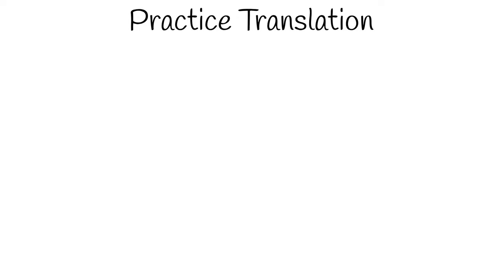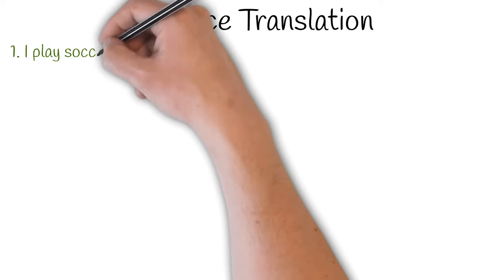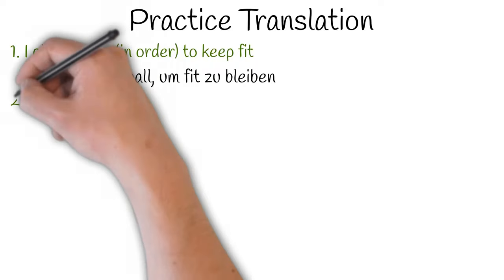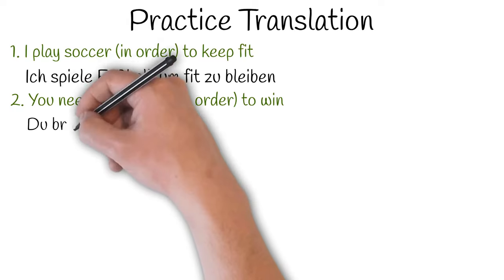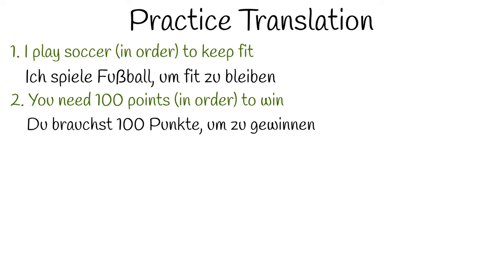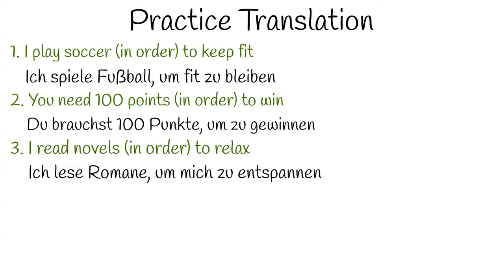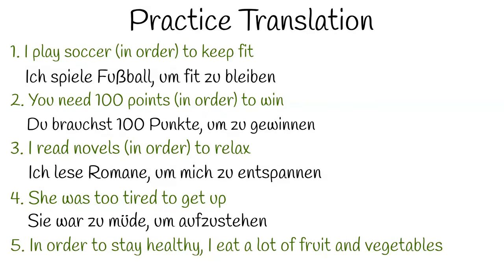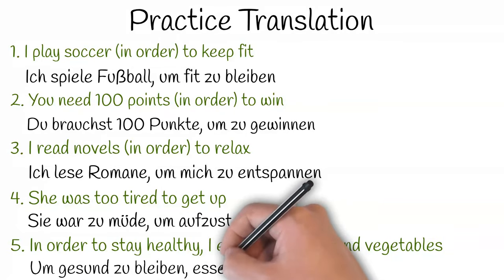Finally, let's do some practice translation from English to German at an easier level. Pause the video after each sentence to try to translate it, then compare with the correct translation. Number one: 'I play soccer in order to keep fit' — 'Ich spiele Fußball, um fit zu bleiben.' Number two: 'You need a hundred points in order to win' — 'Du brauchst hundert Punkte, um zu gewinnen.' Number three: 'I read novels in order to relax' — 'Ich lese Romane, um mich zu entspannen.' Number four: 'She was too tired to get up' — 'Sie war zu müde, um aufzustehen.' Number five: 'In order to stay healthy, I eat a lot of fruit and vegetables' — 'Um gesund zu bleiben, esse ich viel Obst und Gemüse.'